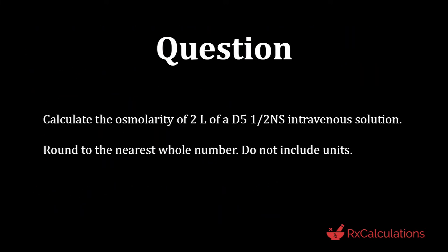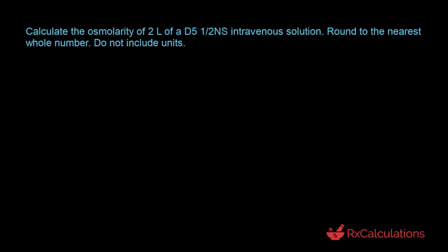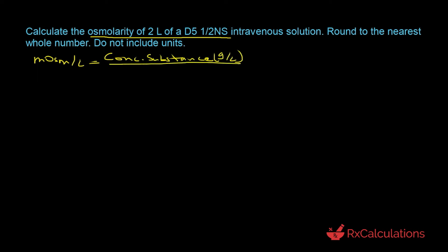This question says: calculate the osmolarity of 2 liters of D5 half normal saline intravenous solution. Round to the nearest whole number. Do not include units. This preparation has two components: dextrose at 5% concentration and half normal saline. We will apply the osmolarity equation twice — once for each component — and then add the osmolarities together, since osmolarity is a colligative property.